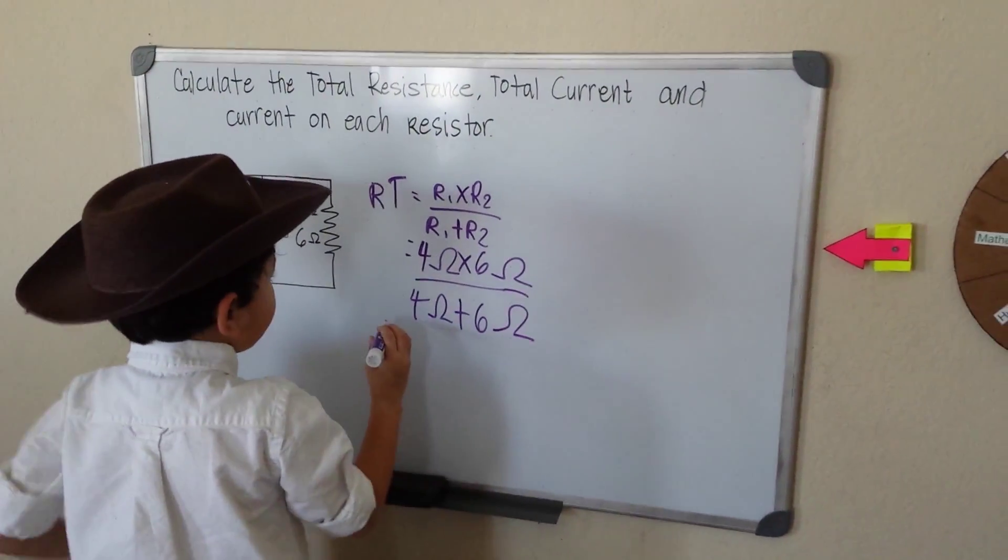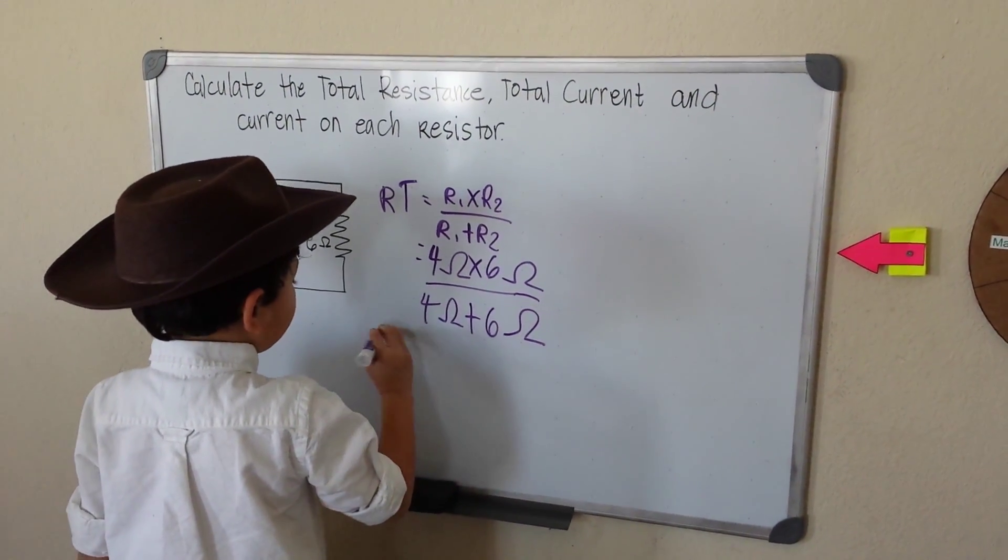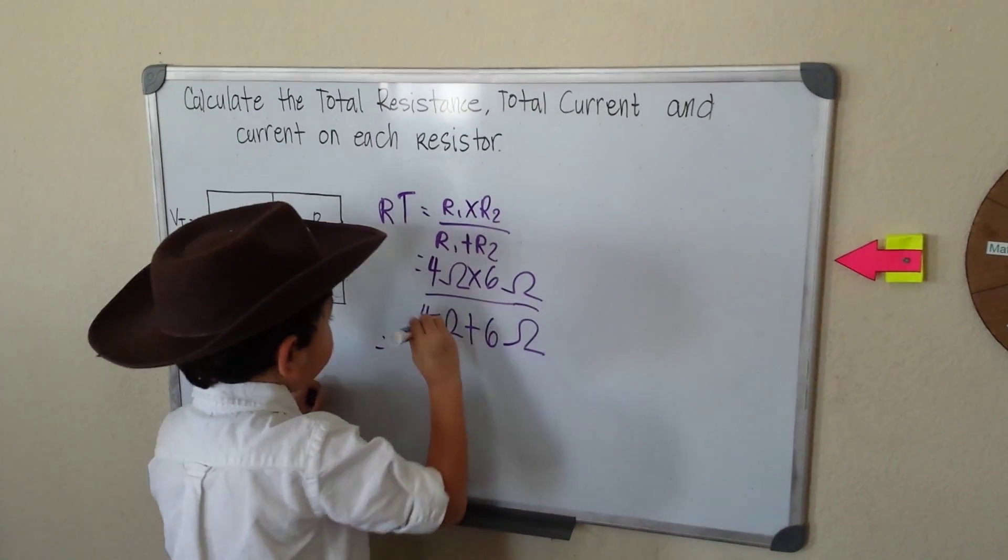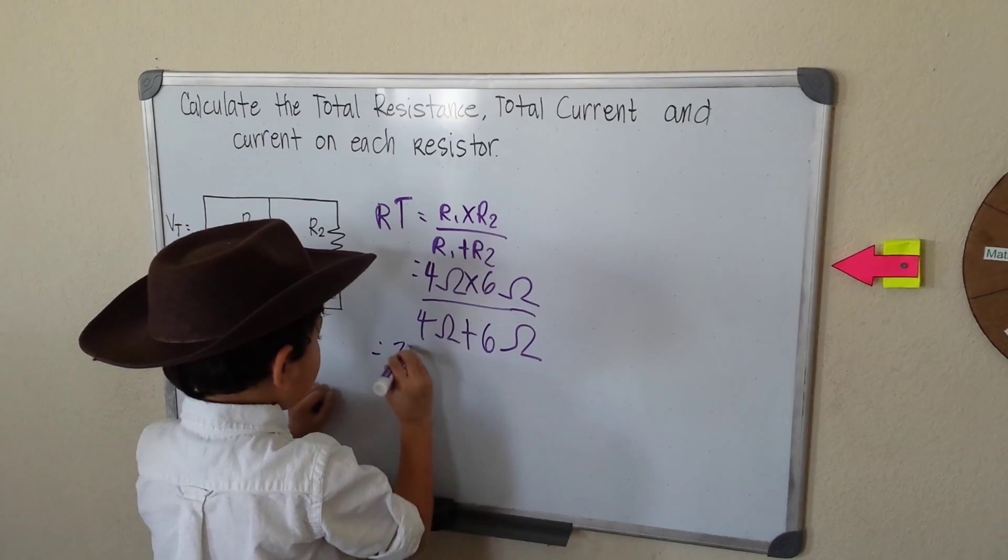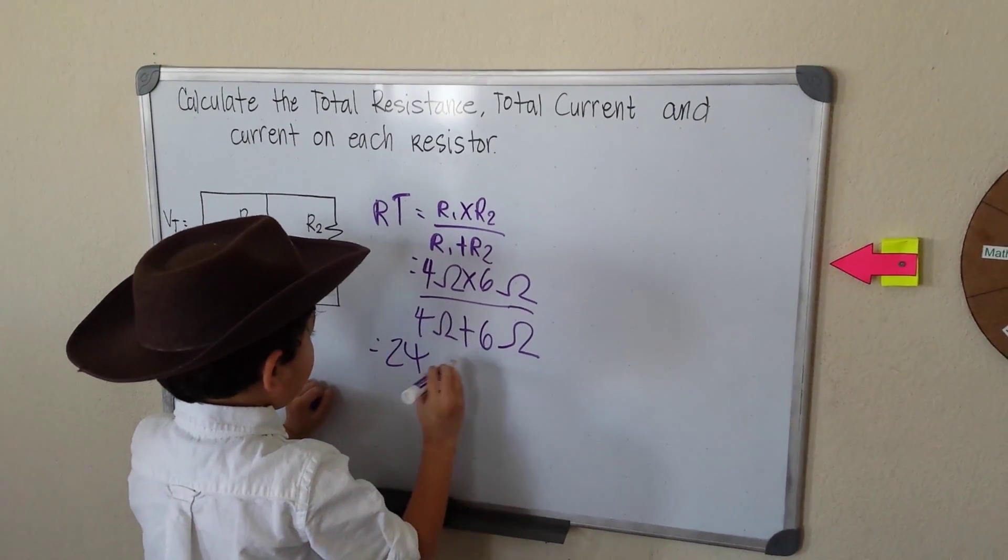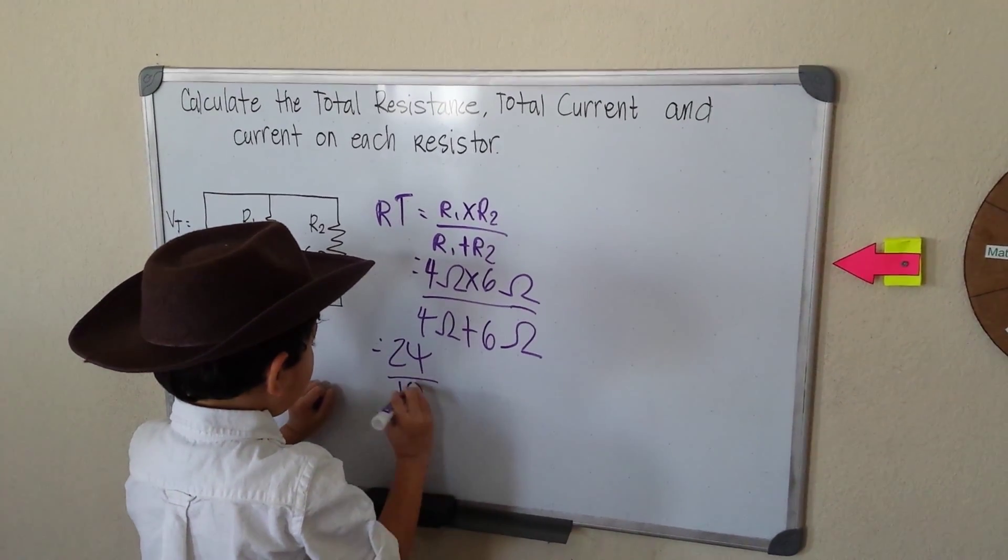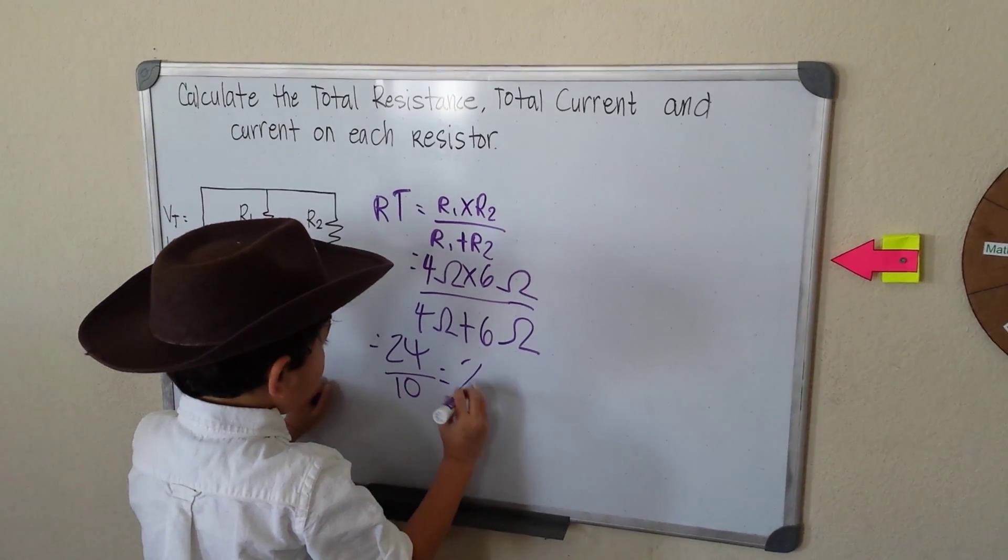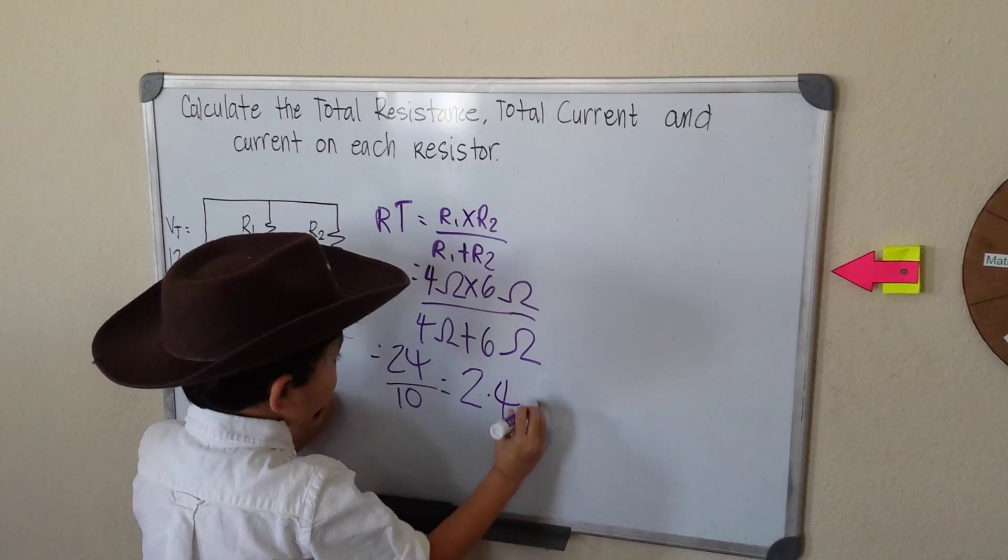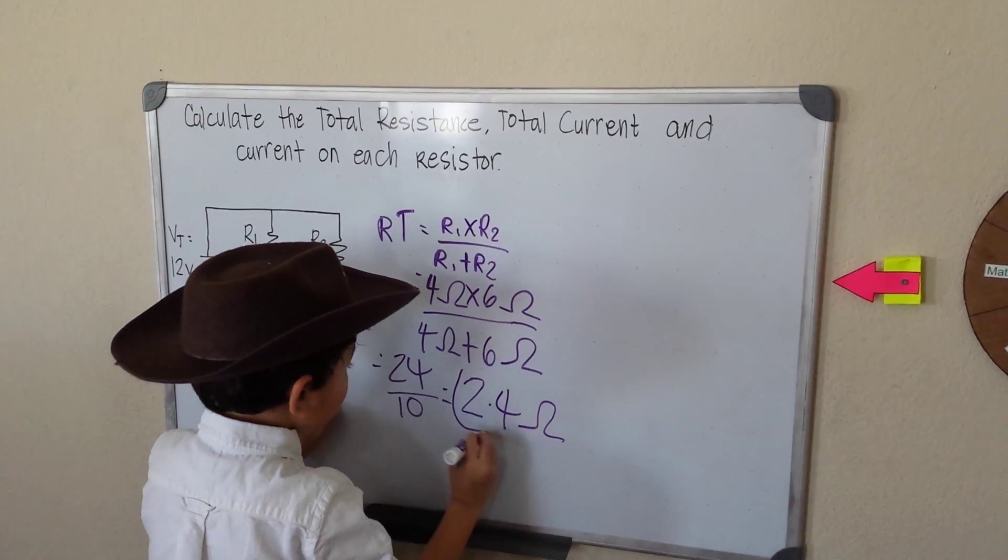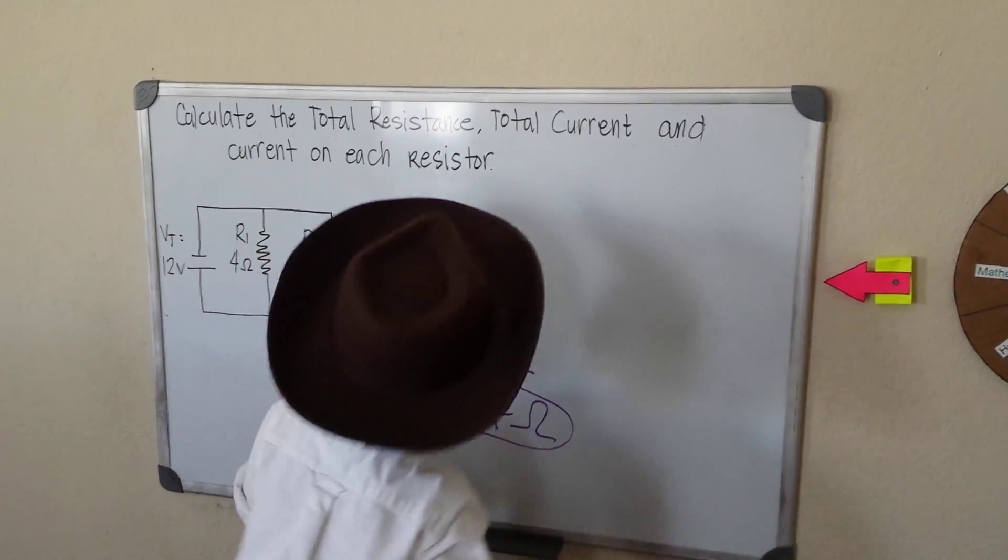So 4 times 6 is 24. 4 plus 6 is 10. So that equals 2.4 is our total resistance.